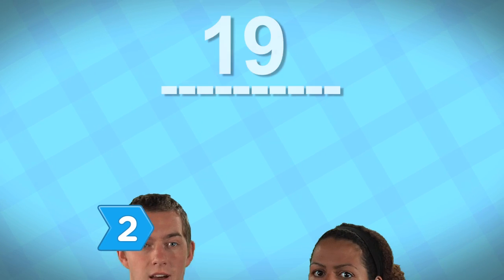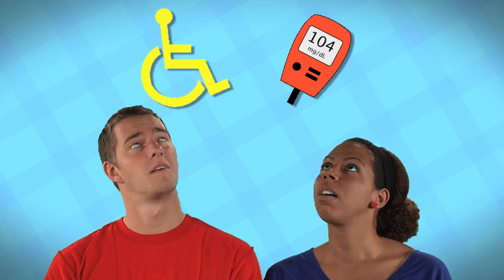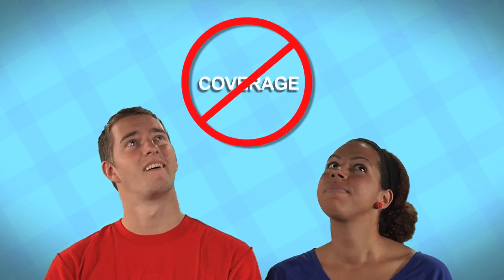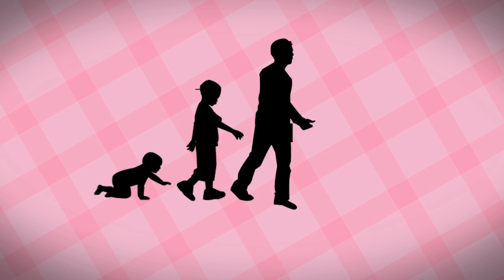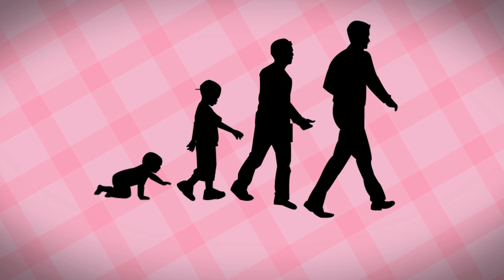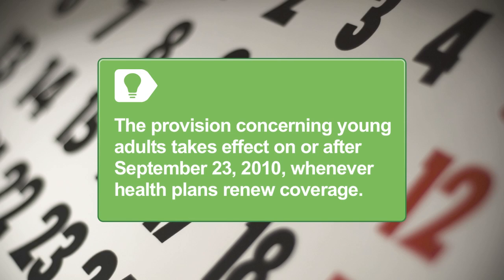Step 2: Understand some of the immediate changes. Patients under 19 can't be denied coverage based on a pre-existing condition. Insurance companies can no longer rescind coverage. Preventive services like mammograms are fully covered. Children may remain on a parent's health insurance plan until age 26, and lifetime coverage limits have been prohibited. The provision concerning young adult coverage takes effect whenever health plans renew coverage on or after September 23, 2010, so some adult children may have a gap in coverage.